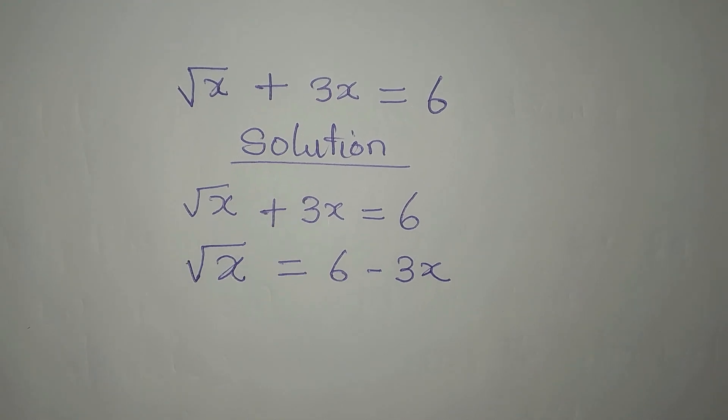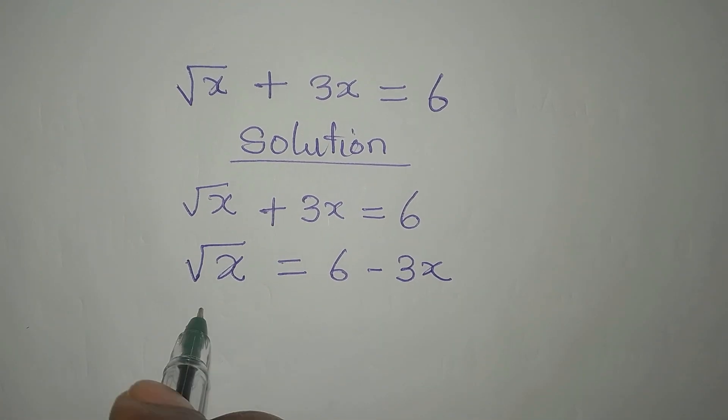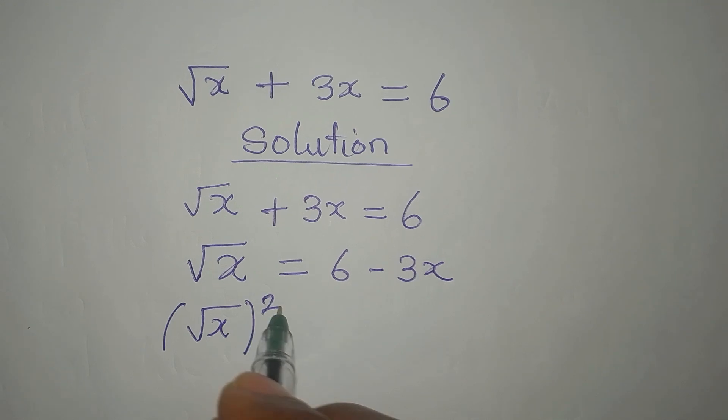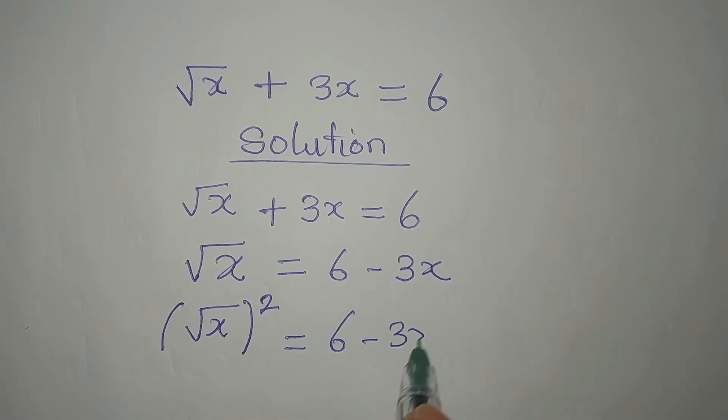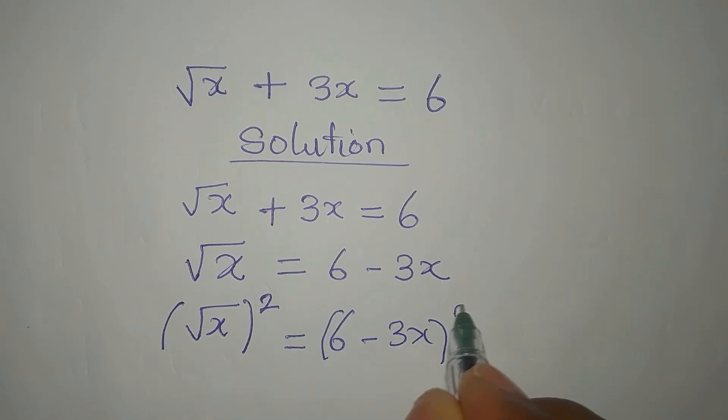Now the next step is to square both sides, and I'm squaring both sides just to remove the square root. Then I'll combine this, which is 6 minus 3x. Then I square this.